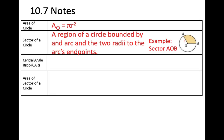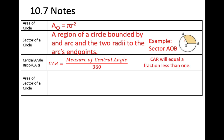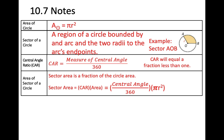The central angle ratio is the measure of the central angle over 360, and it must be less than 1. To find the area of a sector, multiply the CAR by the full circle area: sector area equals (central angle / 360) times πr².